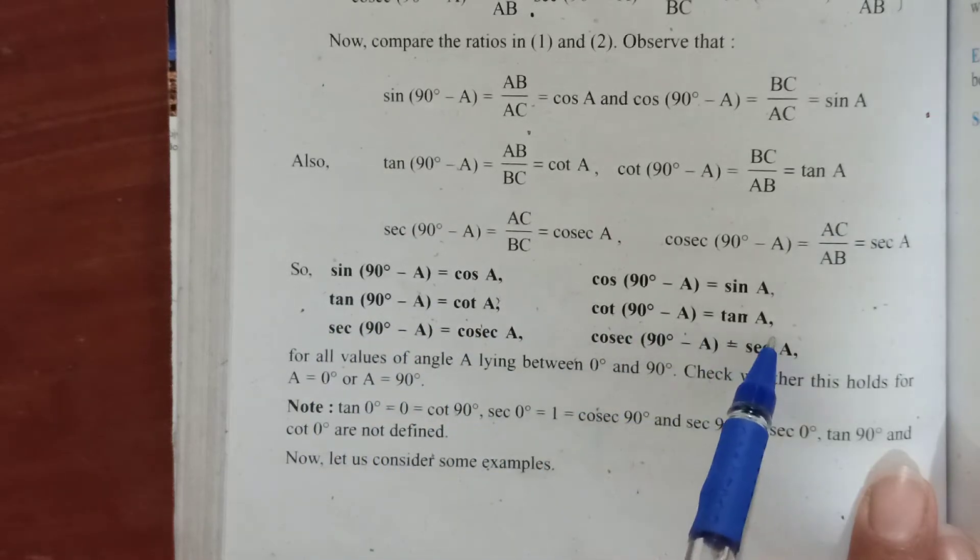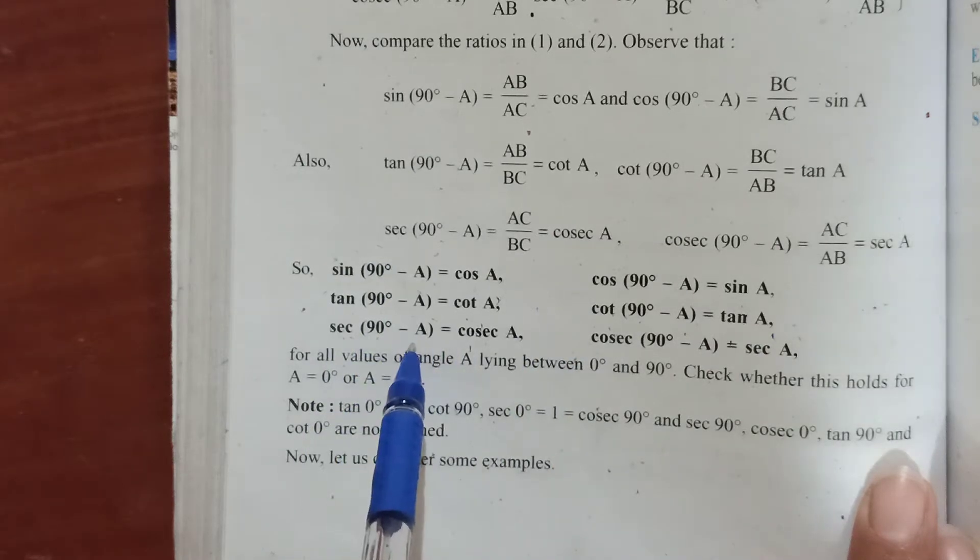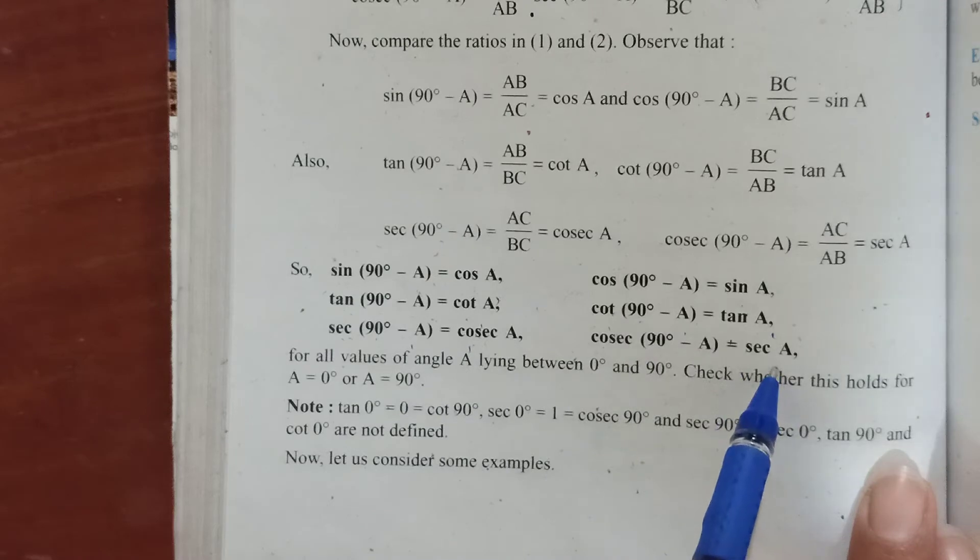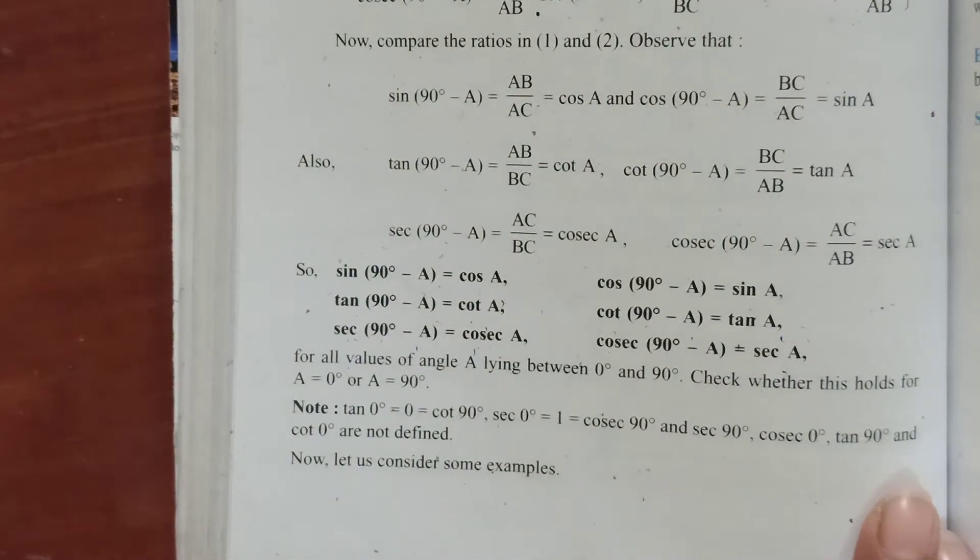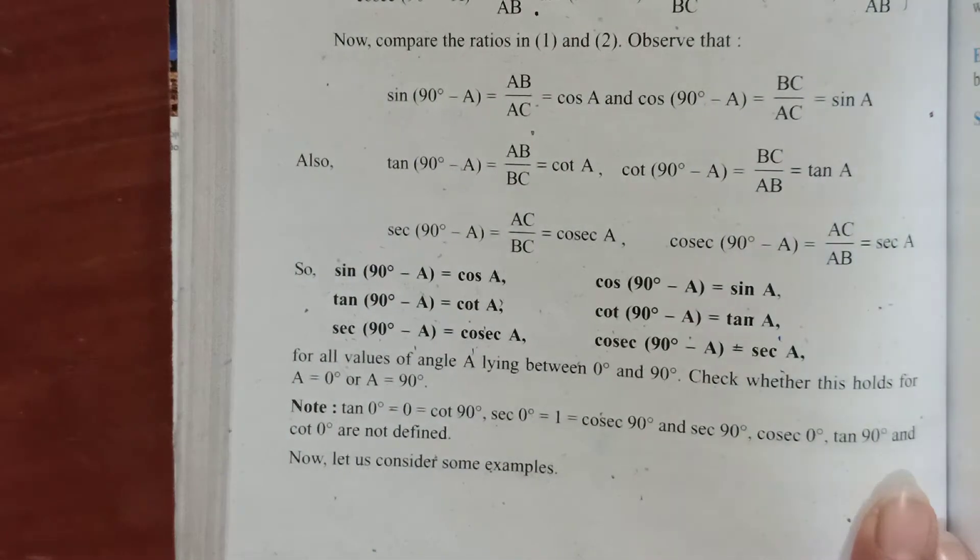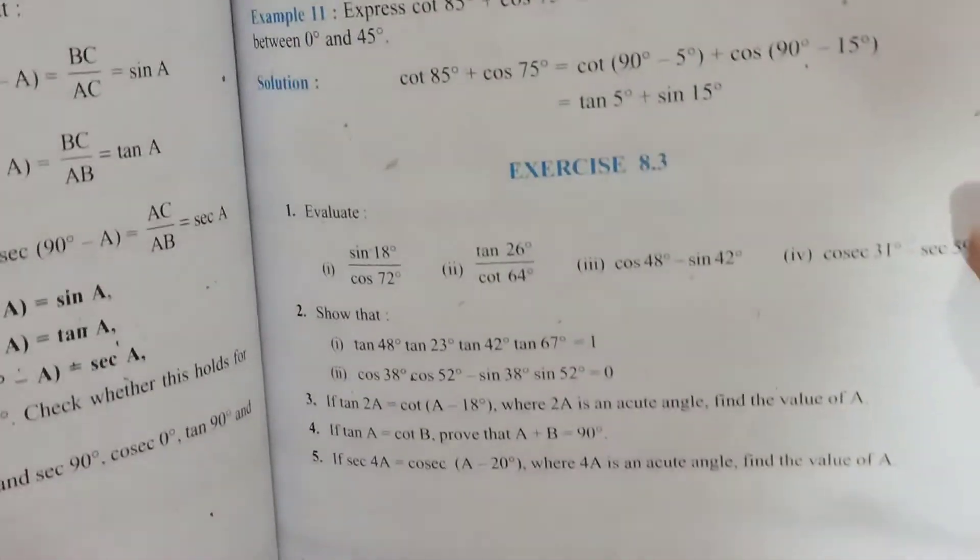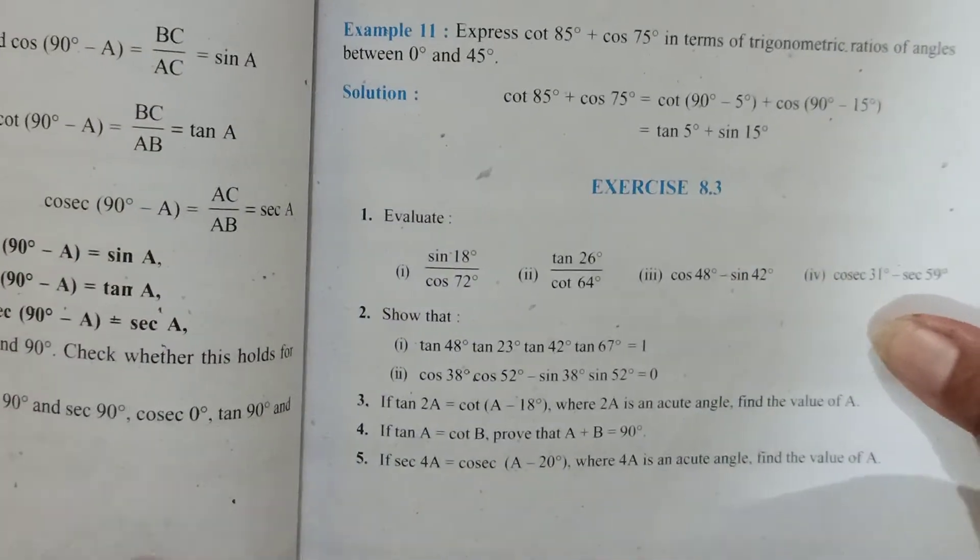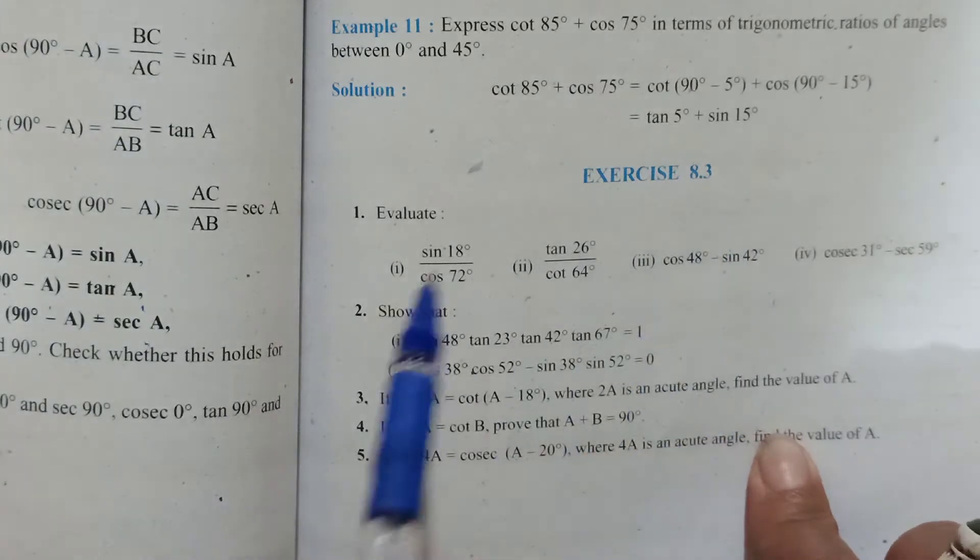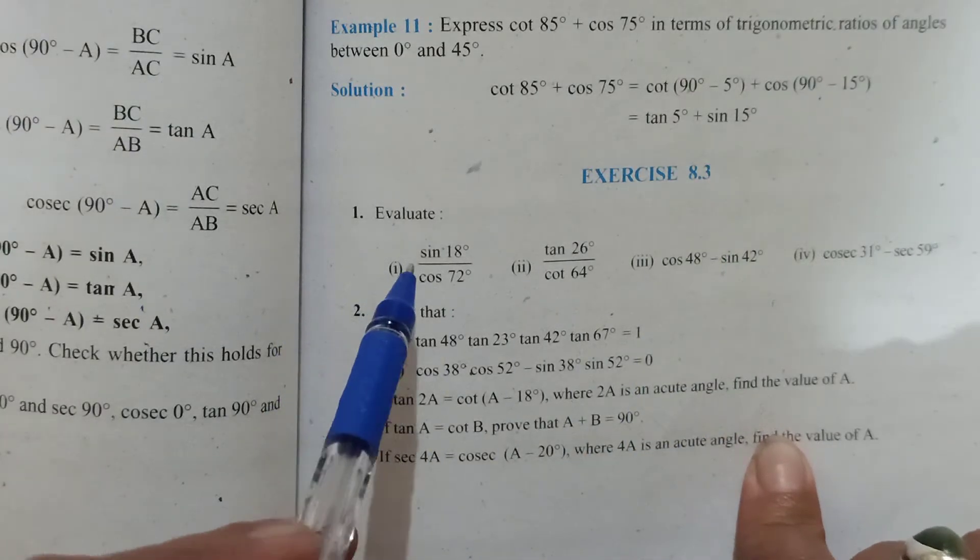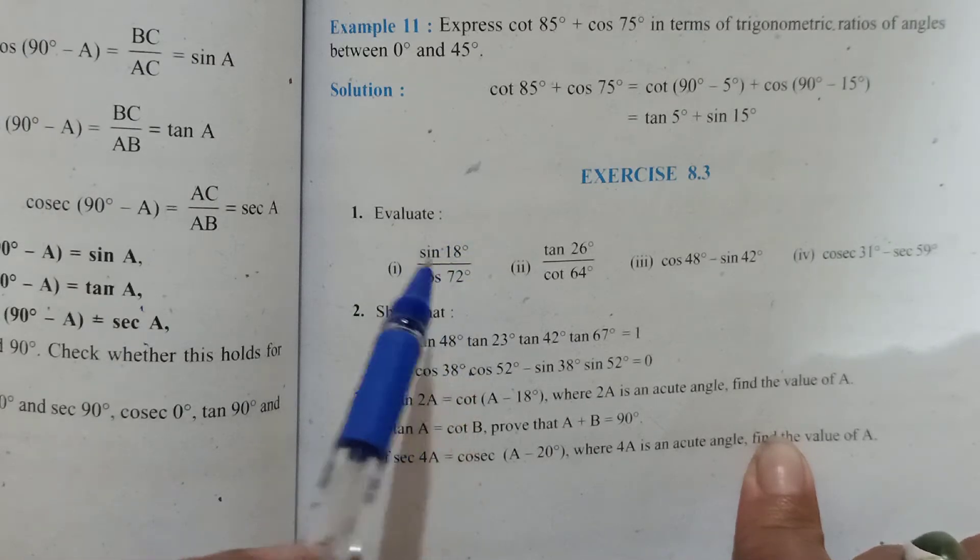So based on this is our next exercise. Before that exercise, of course you will read through the solved examples for better understanding. If there's any problem, let me know. I have solved few questions from the exercise here to explain you how we are going to use these complementary angle formulas that we are studying. So next we'll be taking up Exercise 8.3. They're asking you to evaluate sine of 18 upon cos of 72.